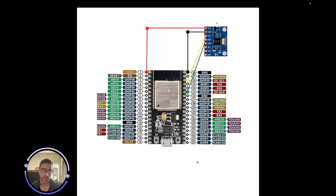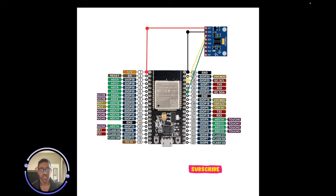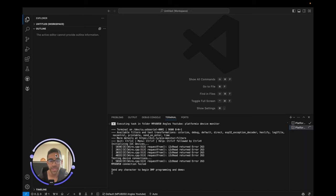We have a pre-soldered MPU6050 — I'll link the one I'm using in the description below. We just want to make the connections as shown and plug it into power. Now that we have the physical connection with our MPU6050 and the ESP32, let's jump into VS Code and PlatformIO, which is the IDE we'll be using to set up our project with the library and get these angular values in real time.